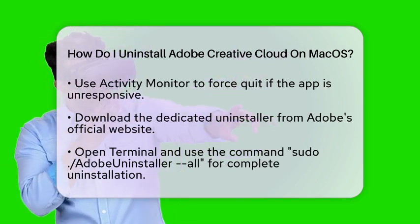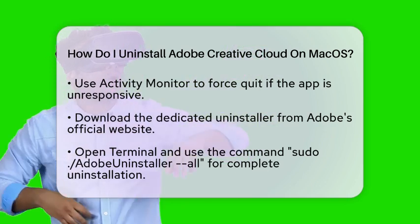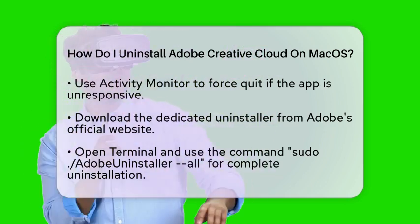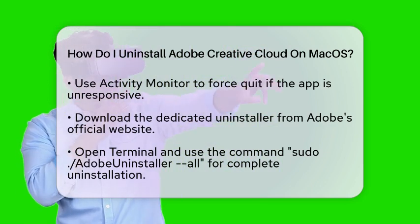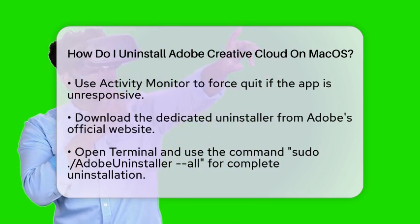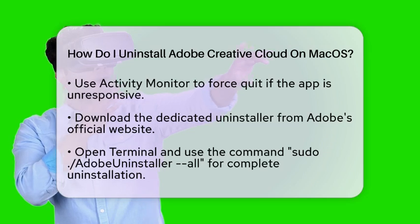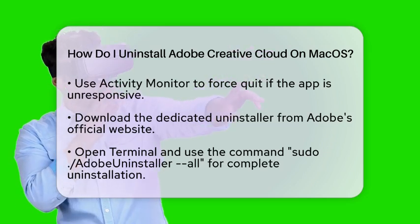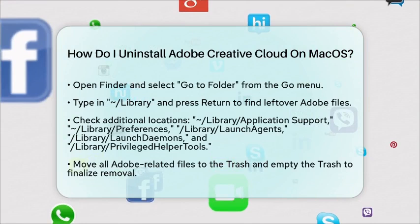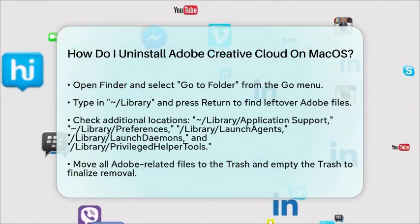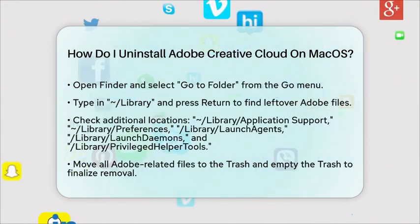After uninstalling the applications, there may still be some leftover files on your system. To remove these, open Finder and select Go to Folder from the Go menu. Type in the path and press Return. Look for any Adobe-related files and move them to the trash. You should also check other locations like Application Support, Preferences, Library Launch Agents, Library Launch Daemons, and Library Privileged Helper Tools.